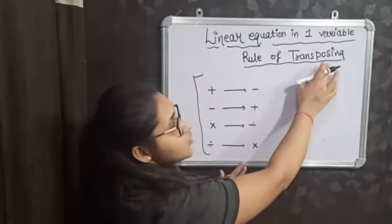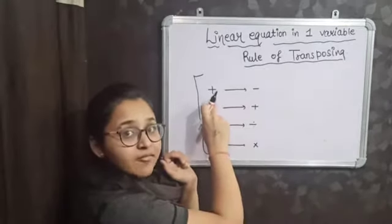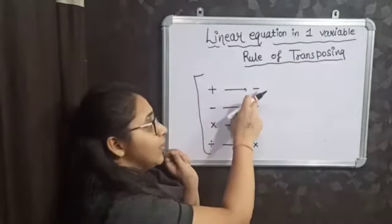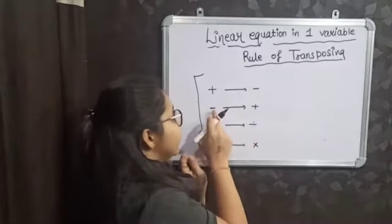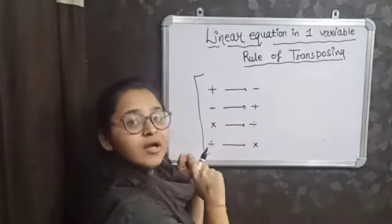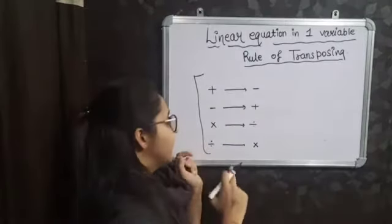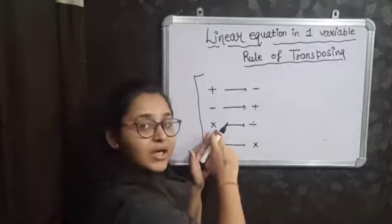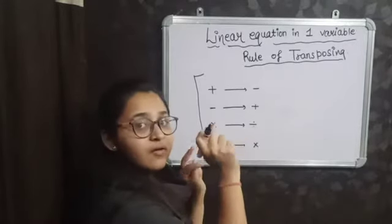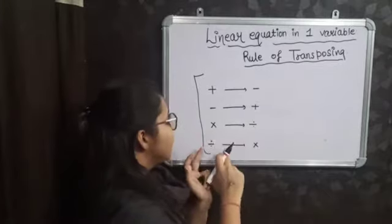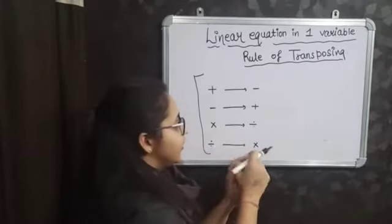The rule of transposing says that if you have a plus sign on the left-hand side, then it will become a minus sign on the right-hand side. If it is a minus sign on the left-hand side, then it will be positive on the right-hand side. If there is multiplication on the left-hand side, then it will be division on the right-hand side. And similarly, if there is division on the left-hand side, then it will be multiplication.